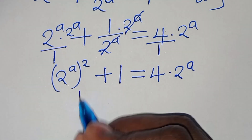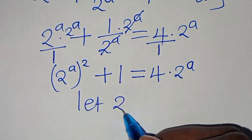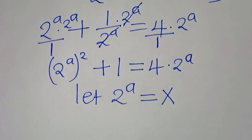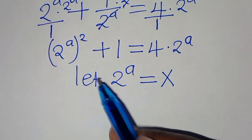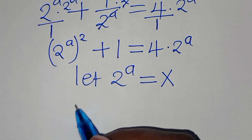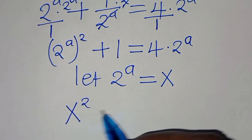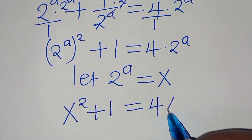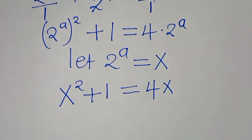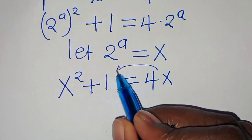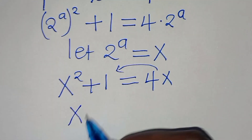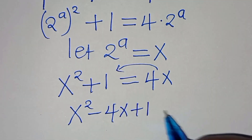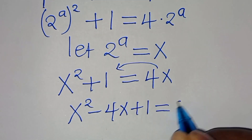The next step is that we can let 2 to the power of a be equal to x. Substituting x into this equation, we have x squared plus 1, this is equal to 4x. Taking 4x to the left-hand side, we have x squared minus 4x plus 1, and this is equal to 0.